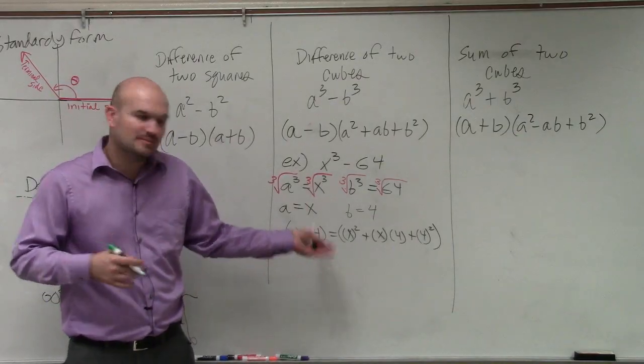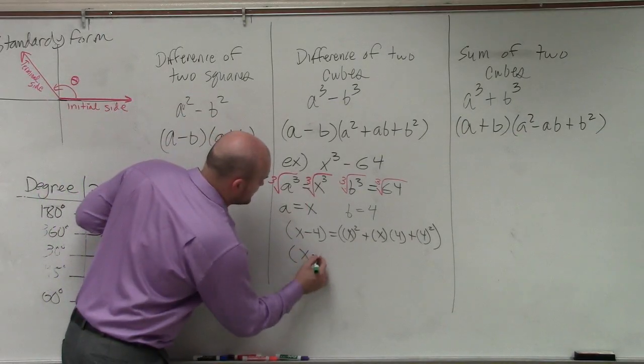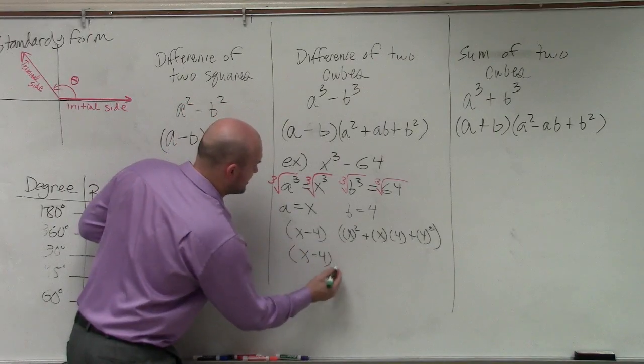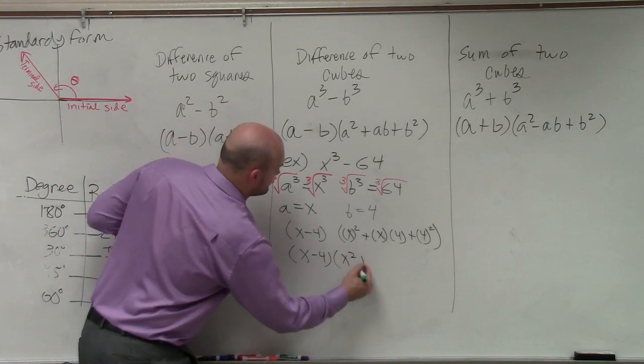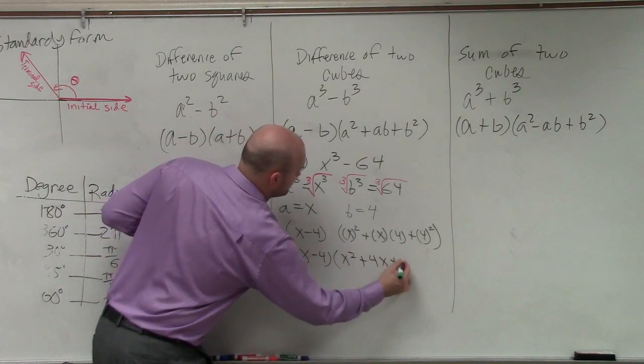Then, just go ahead and simplify. So this is x minus 4, it's just a product, times x squared plus 4x plus 16.